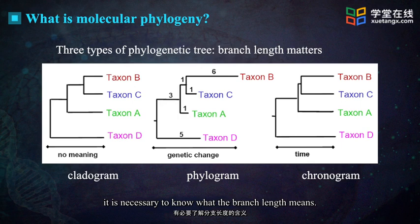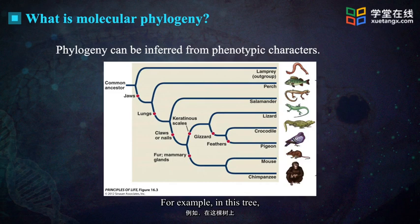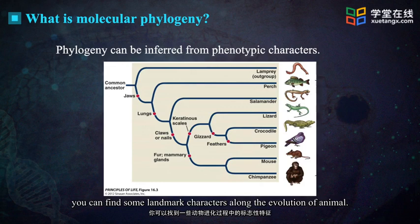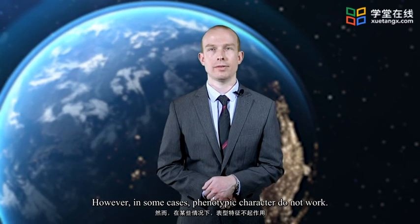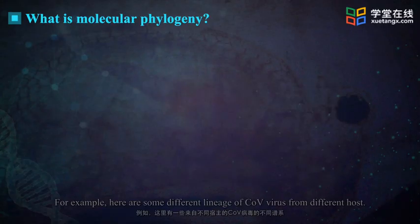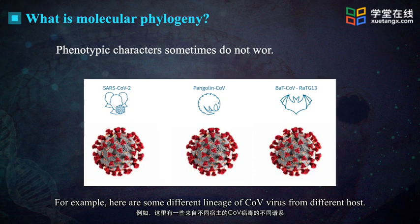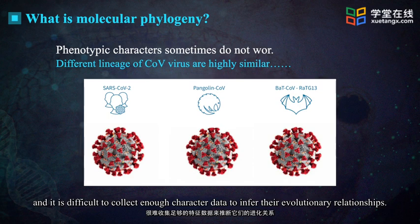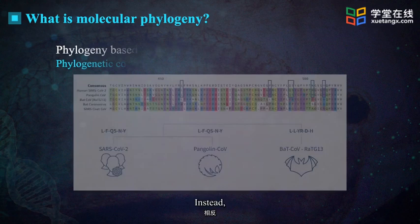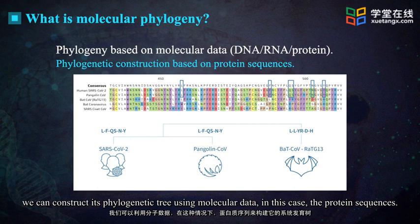Phylogenetic trees can be inferred from phenotypic characters. For example, in this tree, you can find some landmark characters along the evolution of animalia. However, in some cases, phenotypic characters do not work. For example, here are some different lineages of the COV virus from different hosts. The phenotypes of the virus are highly similar, and it is difficult to collect enough character data to infer their evolutionary relationships. Instead, we can construct its phylogenetic tree using molecular data — in this case, the protein sequences.